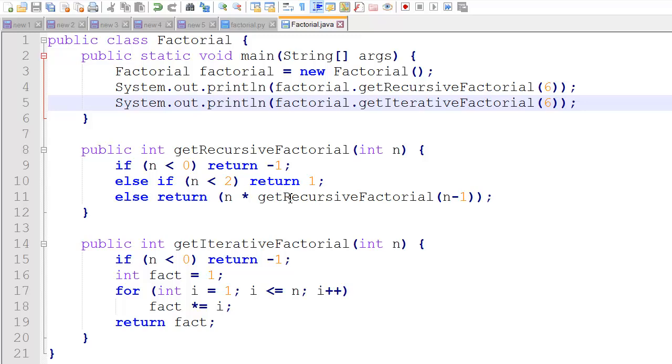And otherwise, it's the recursive case. So we return n times get recursive factorial for n minus 1. So the first time through, it's going to be 6 times get recursive factorial for 5. So that's it. That's our get factorial function, recursive method.